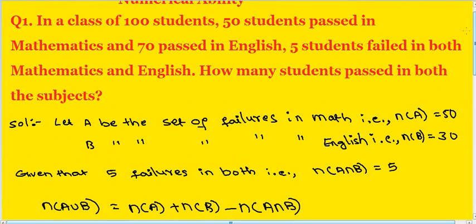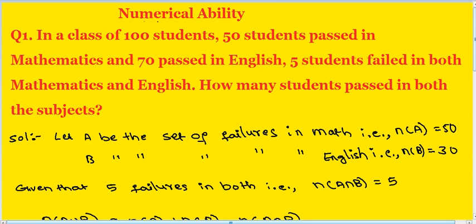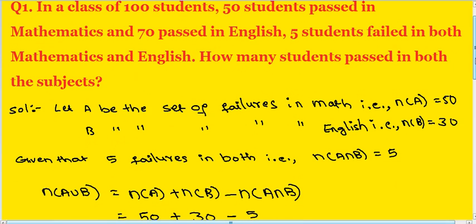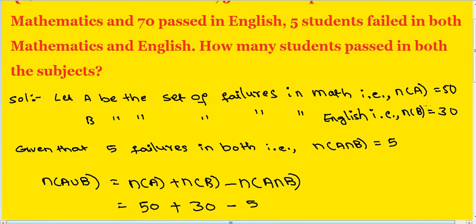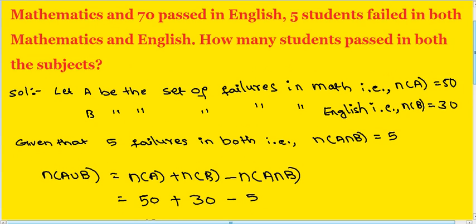Once again, repeat. In a class of 100 students, 50 students passed in mathematics and 70 passed in English. 5 failures in both. Let A be the set of failures in maths — number of A equal to 50. B be the set of failures in English — number of B equal to 30. Number of A intersection B equal to 5.